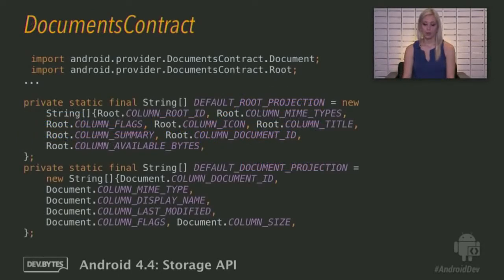One more note before we get into the provider. Usually with content providers, you have to make your own contract document. In this case, it's done for you. All the constants for fields you might return and a lot of other really useful methods are in the class DocumentsContract. These are the columns we're going to return in a cursor when we're queried for documents or the root.